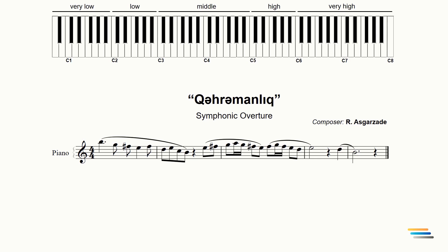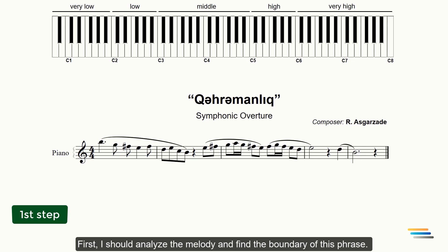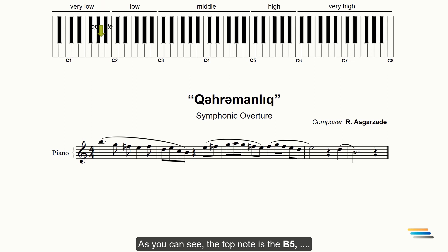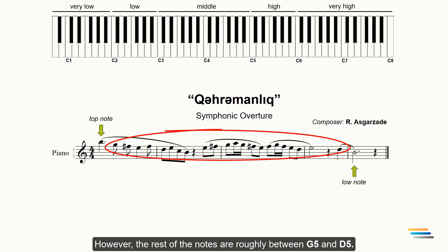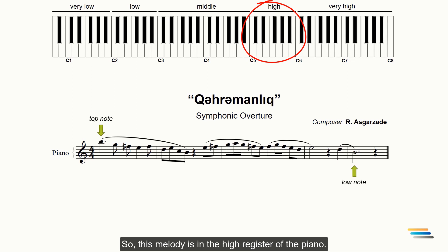This is a short phrase from my symphonic overture. First, I should analyze the melody and find the boundary of this phrase. As you can see, the top note is B5 while the lower note is B4. However, the rest of the notes are roughly between G5 and D5. So, this melody is in the high register of the piano. Let's write your melody and mark the top and the low note.